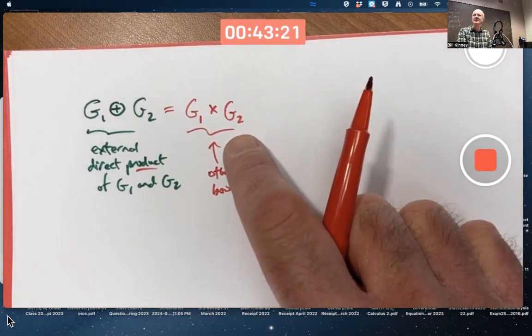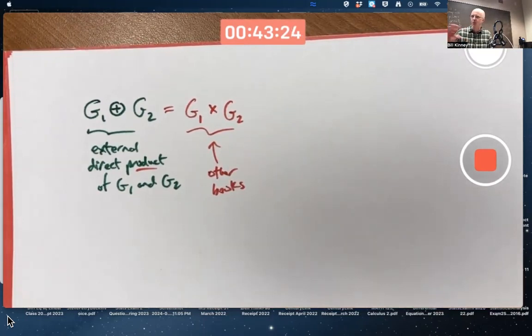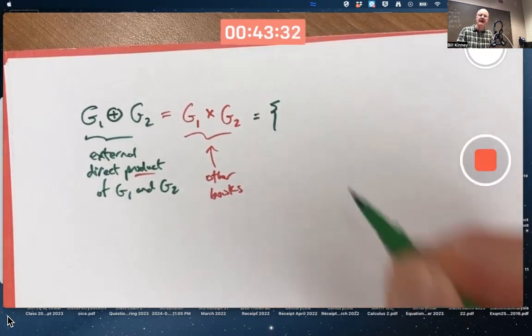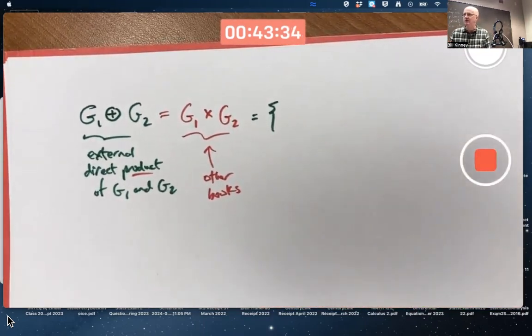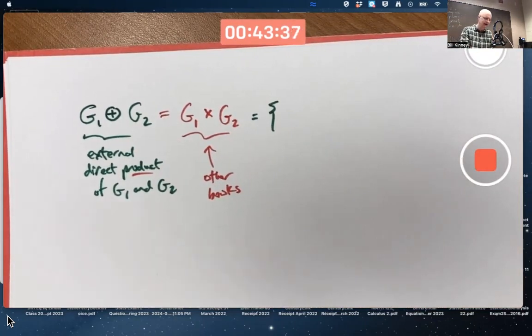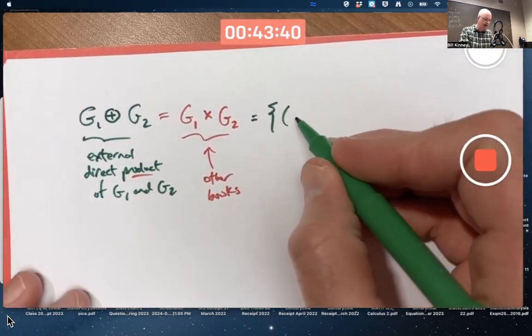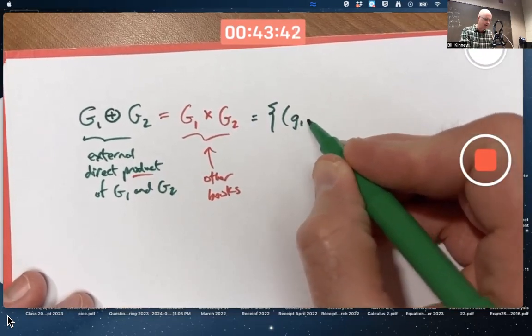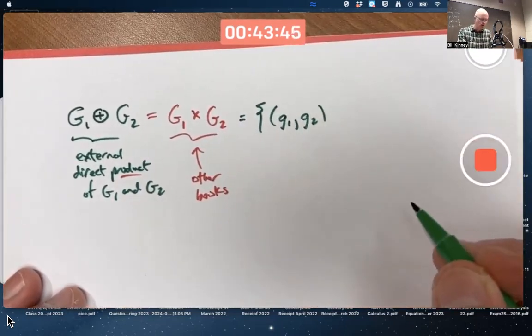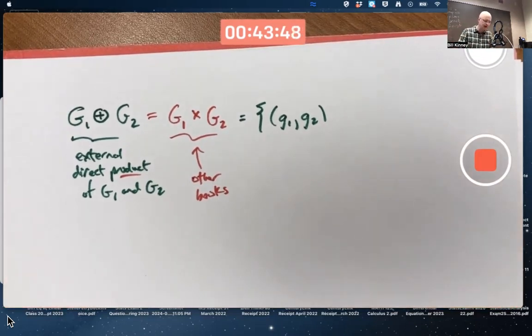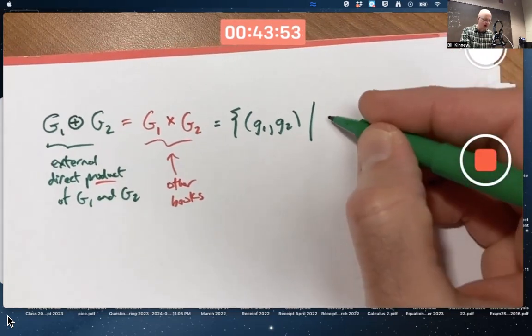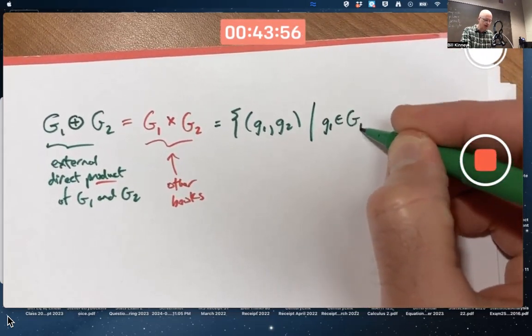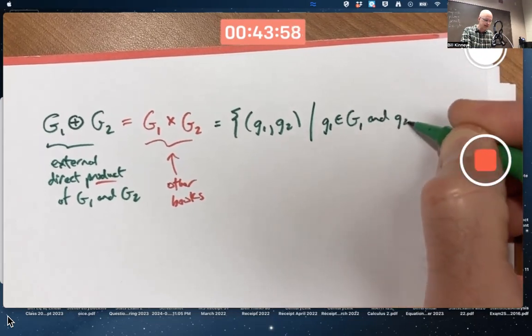Does our book ever use this notation? Yes, but in another way than what we're about to say here. In either case, as a set, this is the set of all ordered pairs of elements from capital G1 and capital G2. Objects of the form (g1, g2) with parentheses around them. An ordered pair with the property that little g1 is in capital G1 and little g2 is in capital G2.